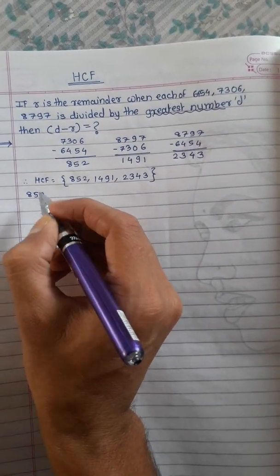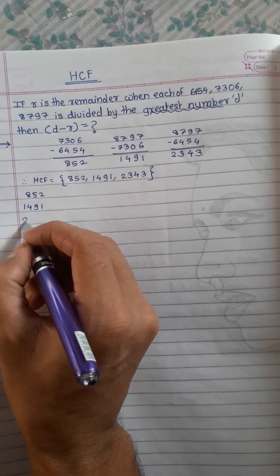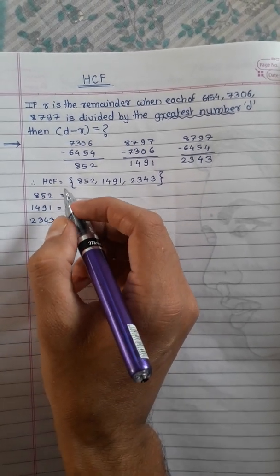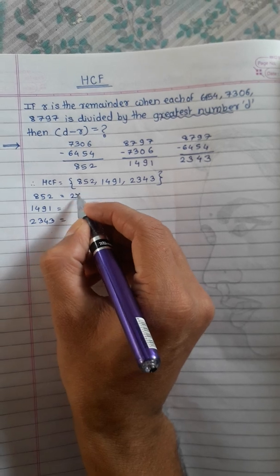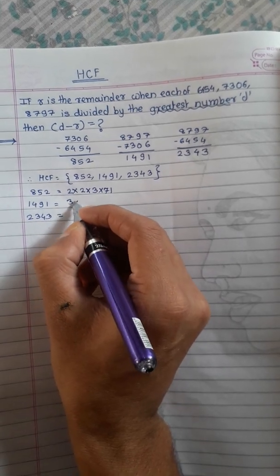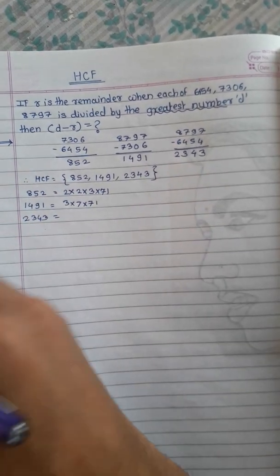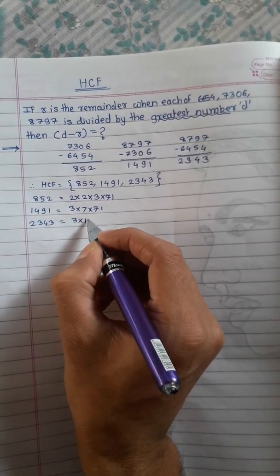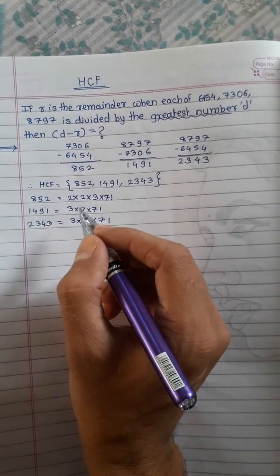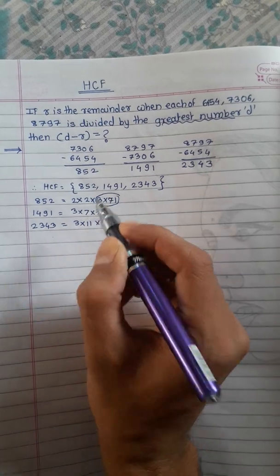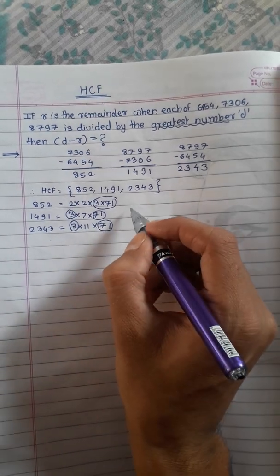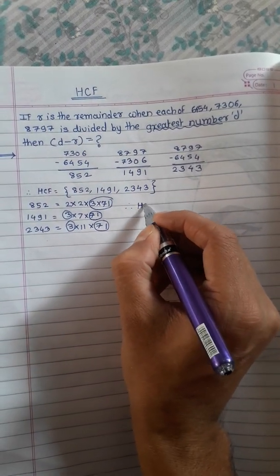We will find the factors of each number using prime factorization. 852 = 2 × 2 × 3 × 71. Then 1491 = 3 × 7 × 71. And 2343 = 3 × 11 × 71. As we know, HCF means highest common factor — the common factors here are 3 and 71.